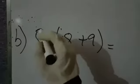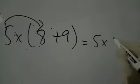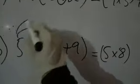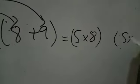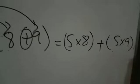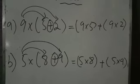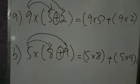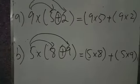For the second part, again you will do this step: 5 into 8, then again you multiply 5 with 9, and the middle plus is given so you will write here plus. So you can easily multiply and show the distributive property of multiplication.